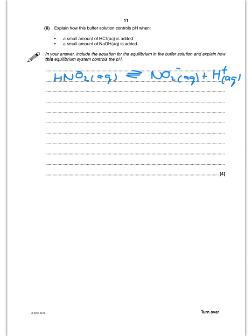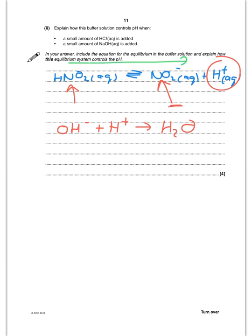To explain how the buffer works: the buffer has a high concentration of HNO₂ and a high concentration of NO₂⁻ from the salt. If OH⁻ is added, it reacts with H⁺ to give water, and the equilibrium shifts right to replace the H⁺ removed. If H⁺ is added instead, the equilibrium shifts left — H⁺ reacts with NO₂⁻ to produce HNO₂ — thereby removing the added H⁺.